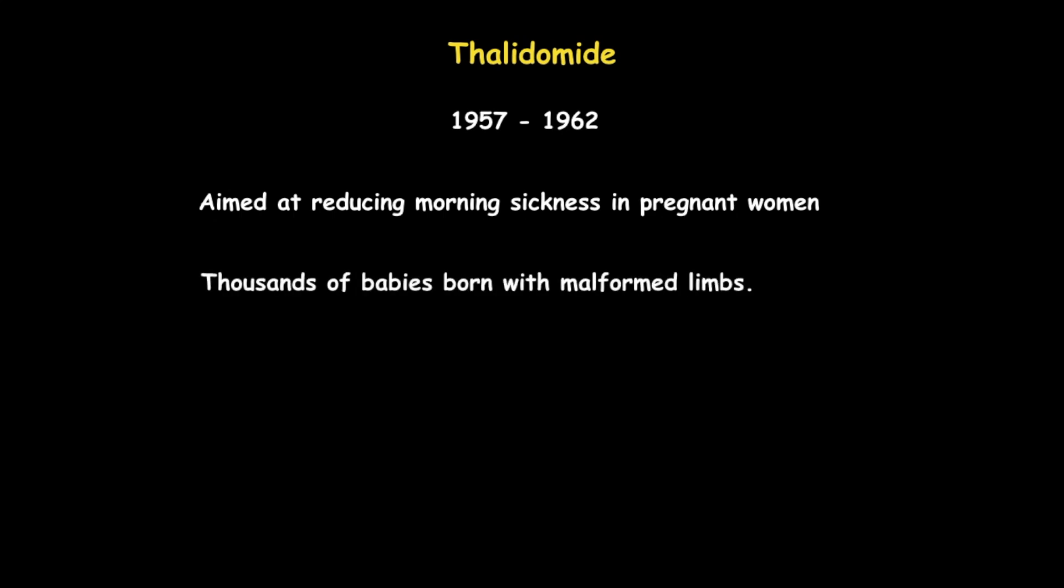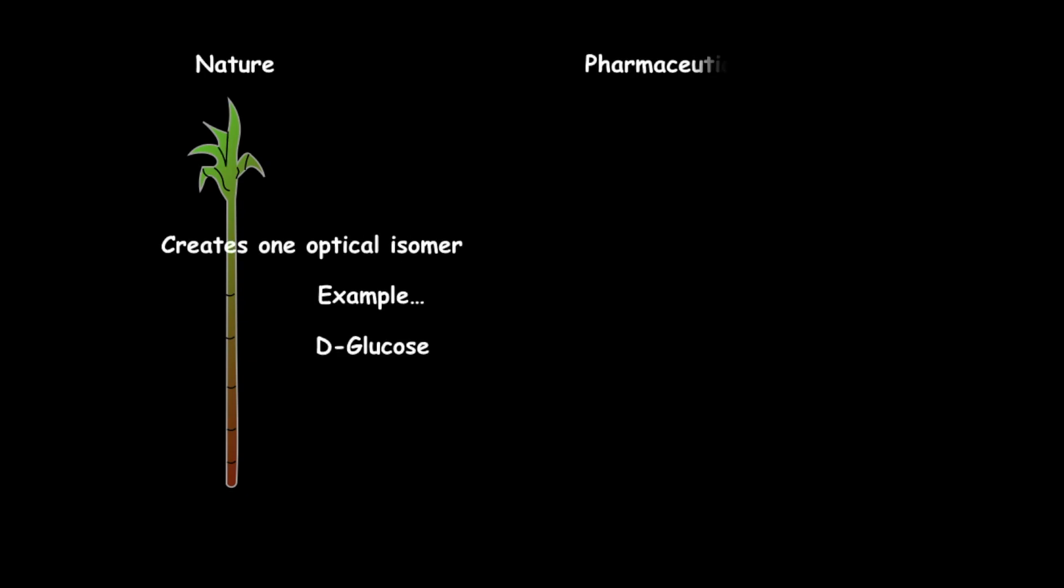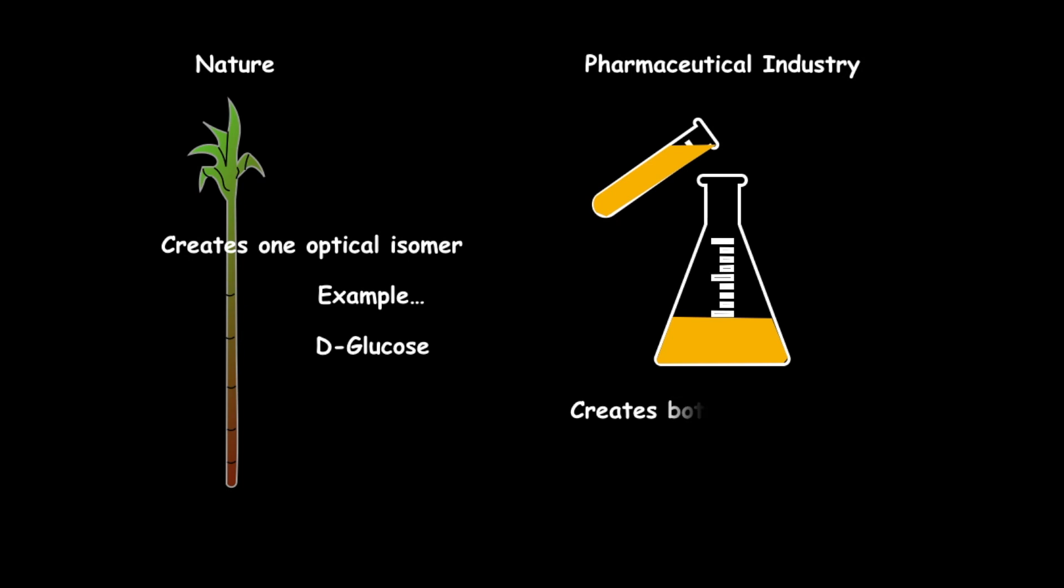Scientists speculated that one of the optical isomers of the drug was acting as a teratogen, preventing the proper growth of limbs. While living organisms have the necessary machinery to create only one optical isomer, the pharmaceutical industry tends to produce a mixture of both L and D-based versions of a drug. And here lies the problem.